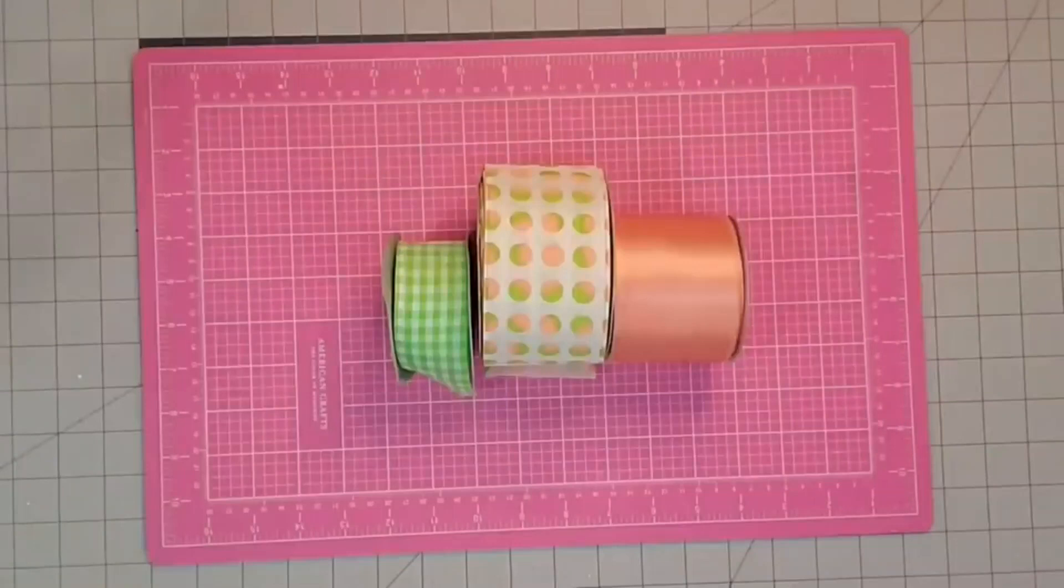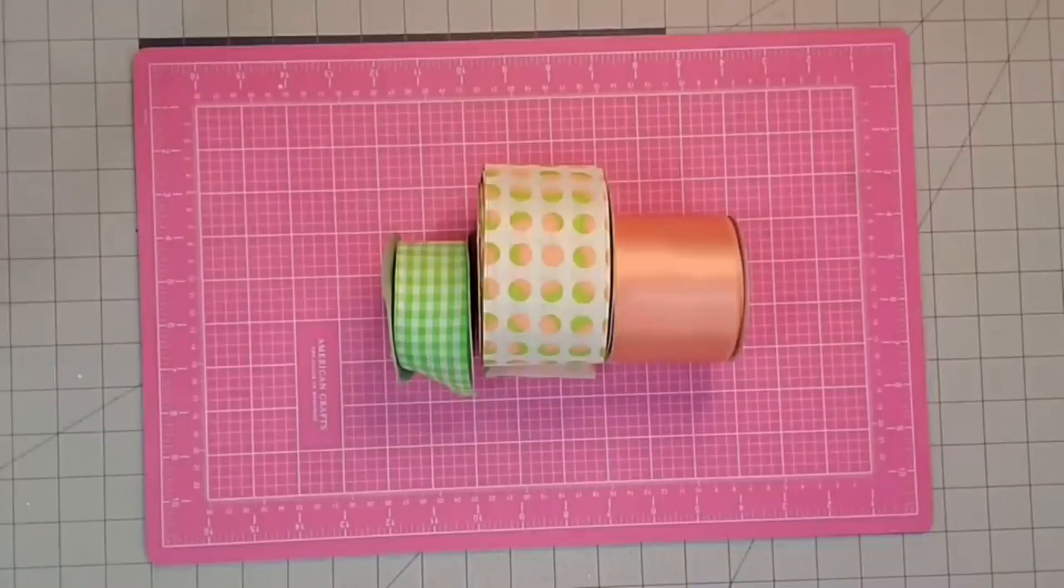Some wired ribbon, two that are two and a half inch and one that is one and a half inch. The one and a half inch came from a wreath specialty store. The one in the middle came from Hobby Lobby and the peach color came from Michaels.